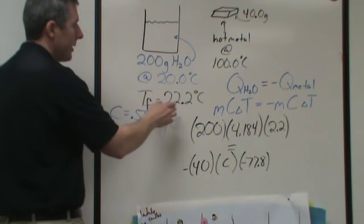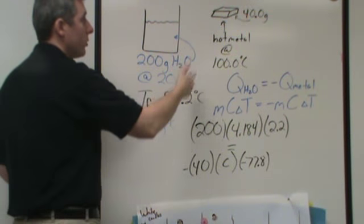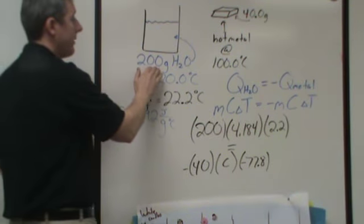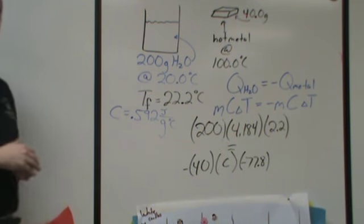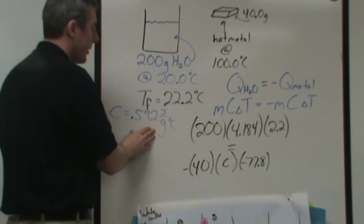The second thing that makes sense is if you look at the temperature change. The water only changed by two degrees, whereas the metal drops by almost 80. And we do have different amounts. We do have five times the water, but you're not seeing five times the temperature drop. You're seeing a lot more than that. So anyways, this answer makes sense.